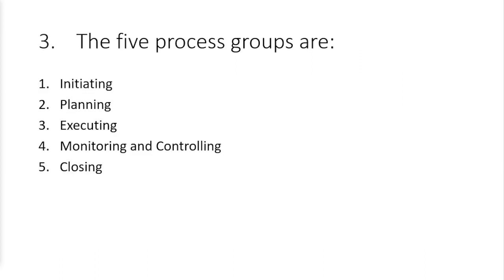The third question was the five process groups: initiating, planning, executing, monitoring and controlling, and closing. Initiating is where you authorize the project. Planning is where you plan. Executing is where you carry out the plan. Monitoring and controlling is where you check the work as it's being carried out — it's ongoing, a continuous loop with executing, like the plan-do-check-act cycle. Closing is where you close out either a phase or the project as a whole.